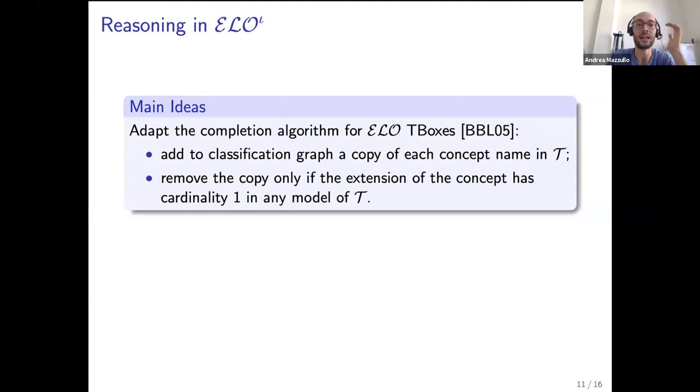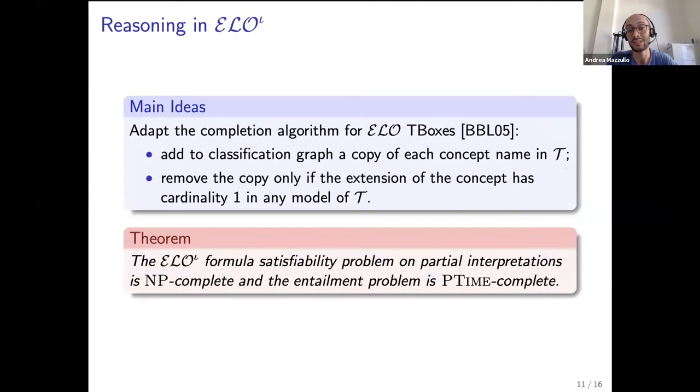We also have results on yellow iota obtained by adapting the completion algorithm for yellow T-boxes. We add to the classification graph a copy of each concept name in the T-box and remove this copy only if the extension of the concept has cardinality equal to one in any model. From this we obtain that yellow iota formula satisfiability on partial interpretations is NP-complete and the entailment problem is PTIME-complete.